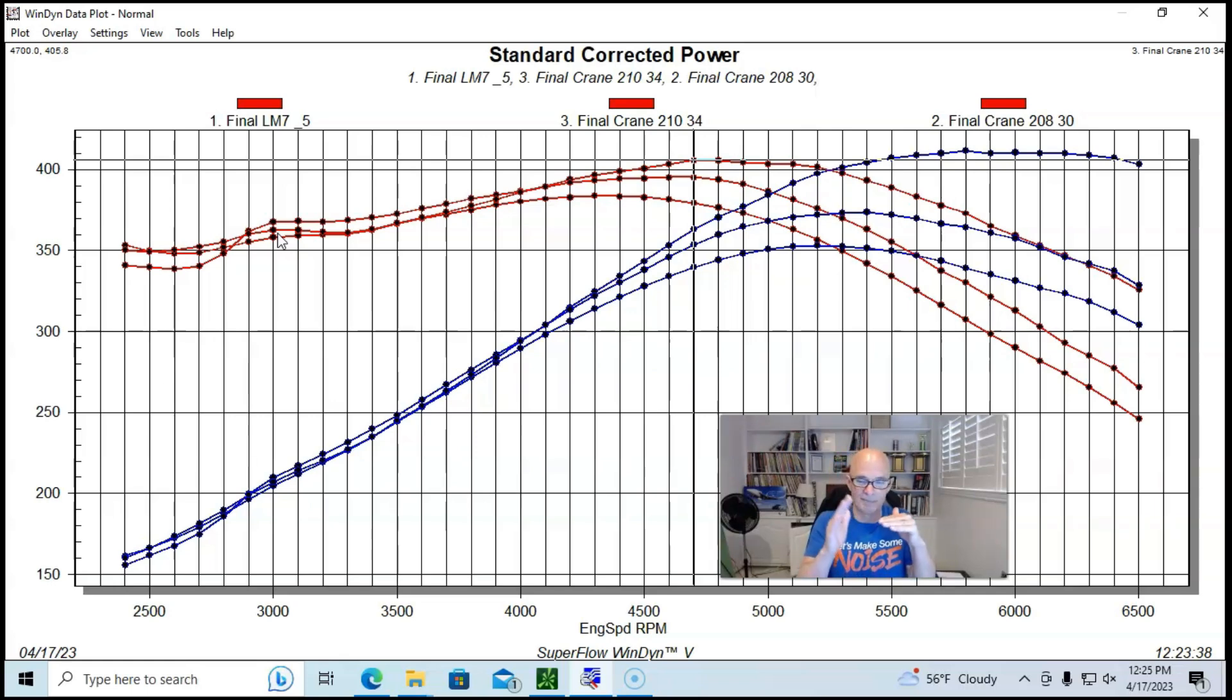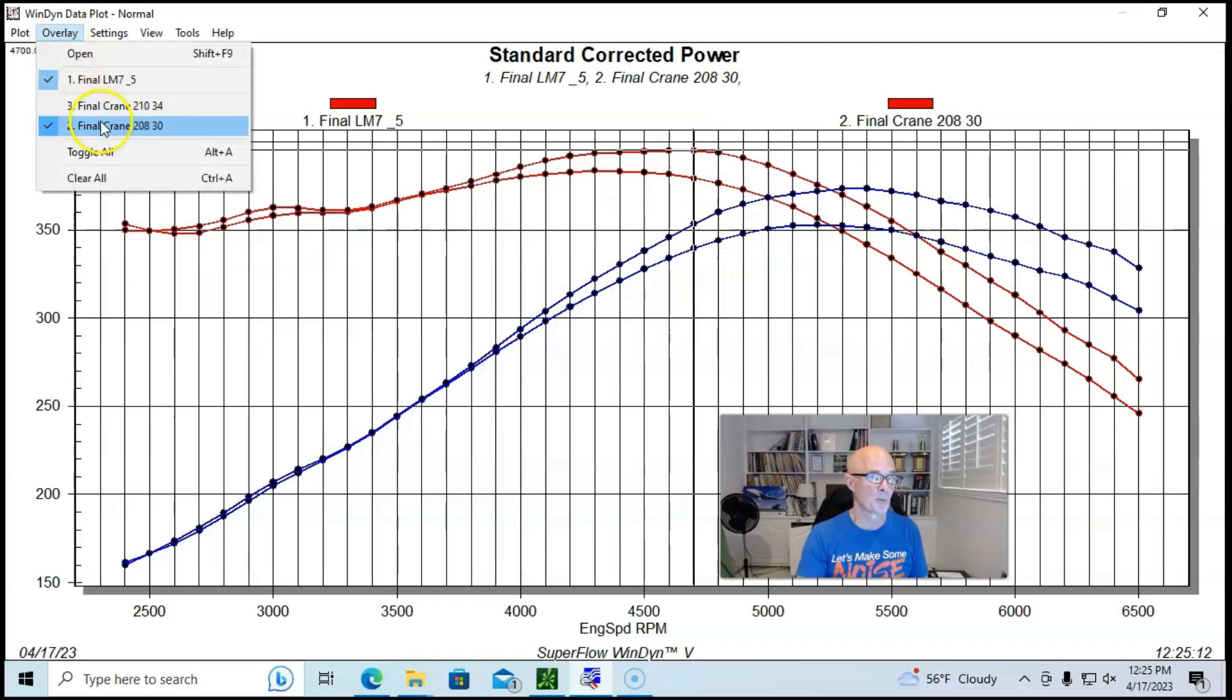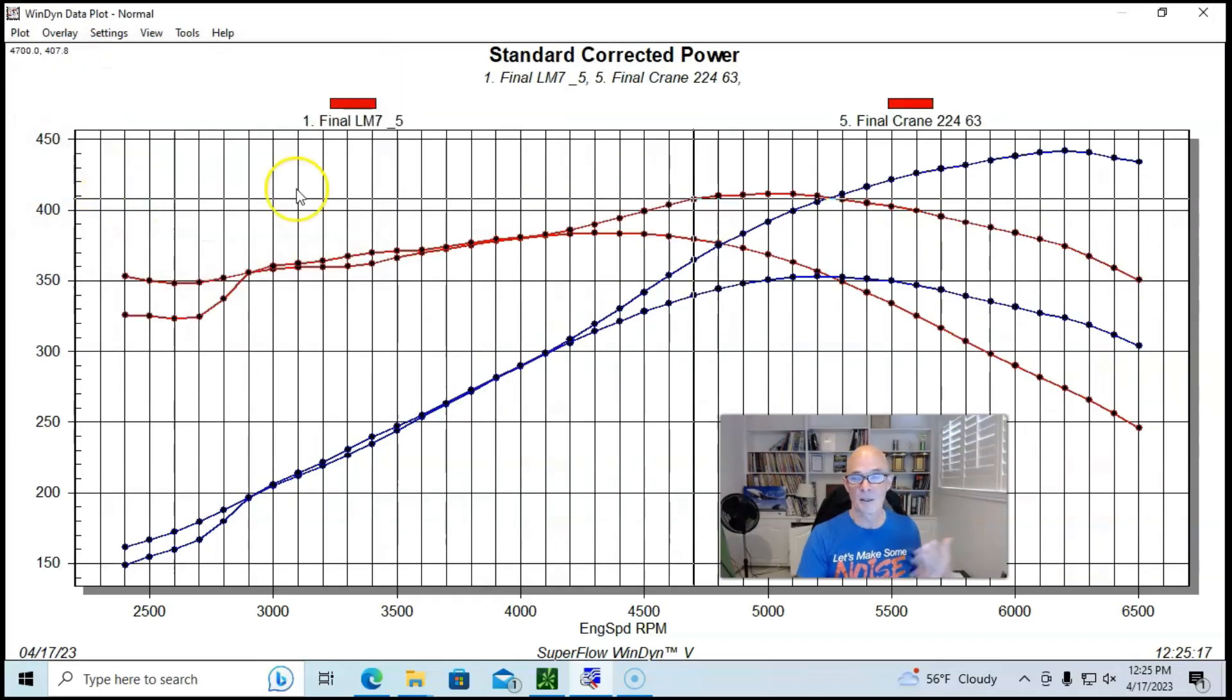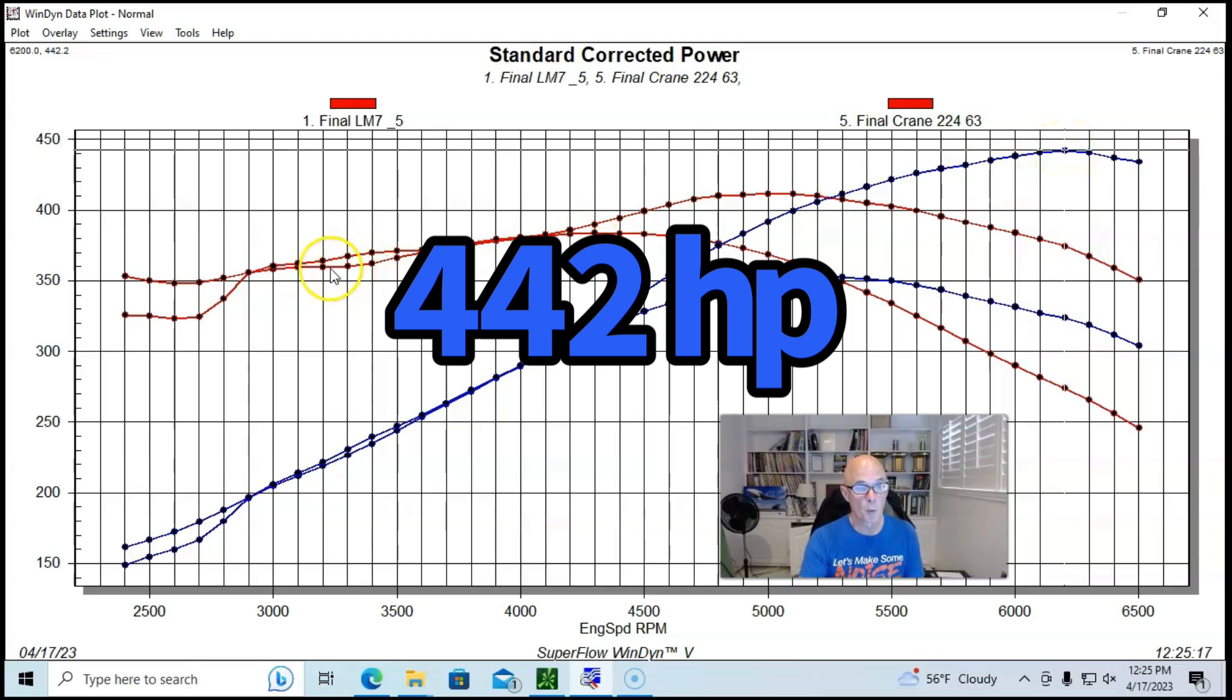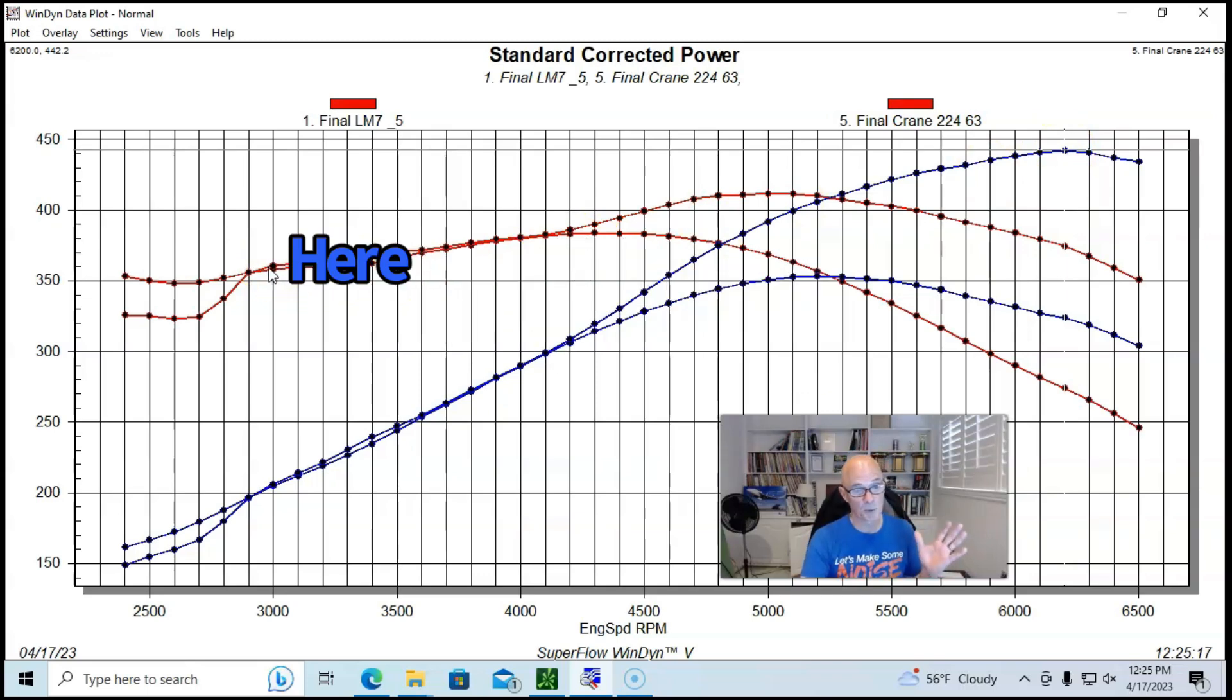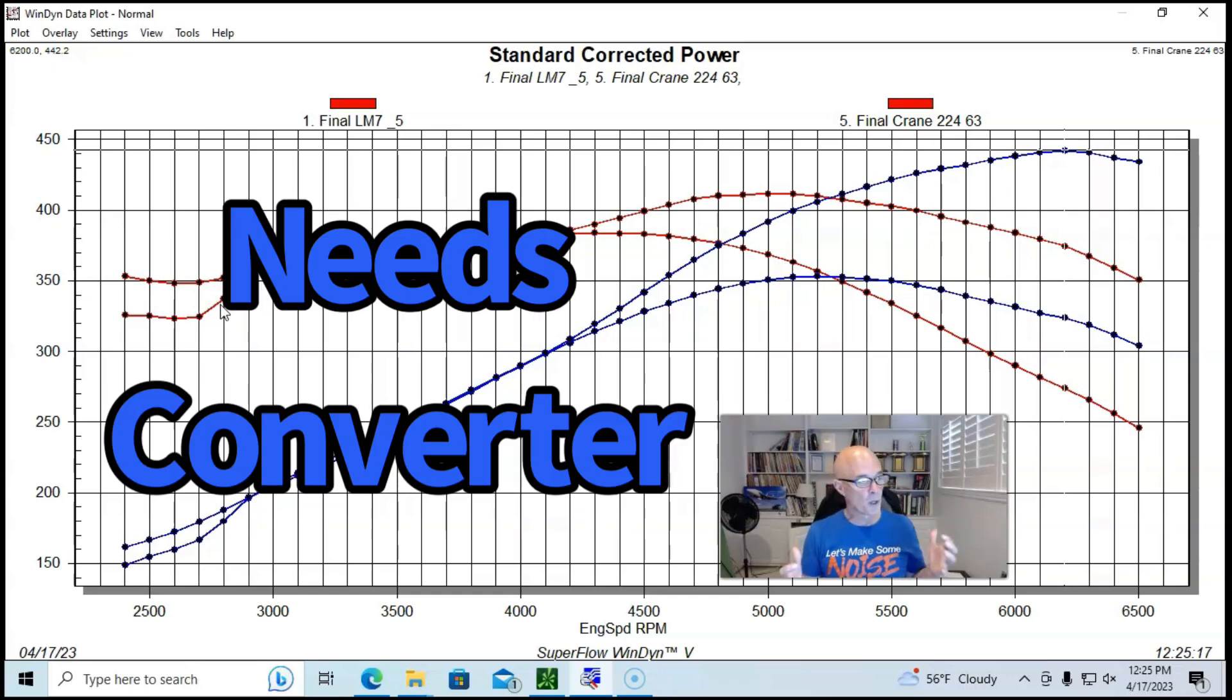I'll show you one more cam where we again improved the peak torque. This one picked up a lot - 412 foot-pounds of torque, 442 horsepower. It was a little bit better than the stock cam between 3,000 and 3,500, but look below 2,900 RPM - lost a lot of torque. This was a 224/232 cam. This is why I normally don't recommend this camshaft unless they're concerned about power production from 4,500 to 6,500 RPM.